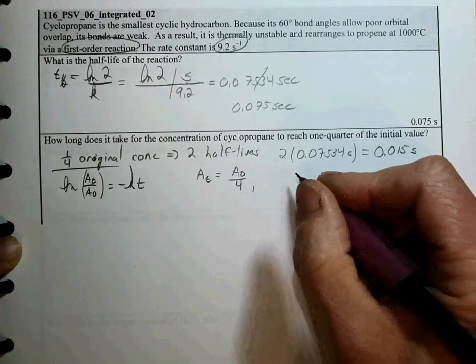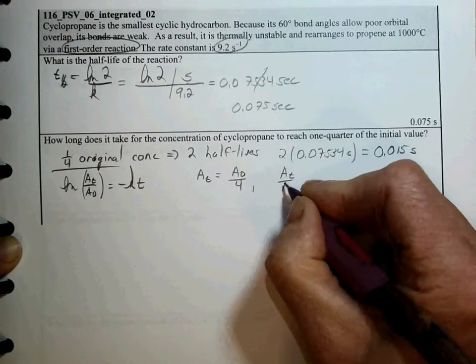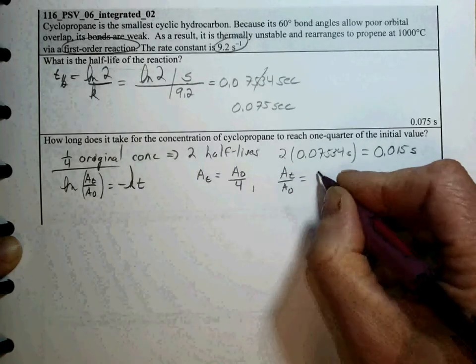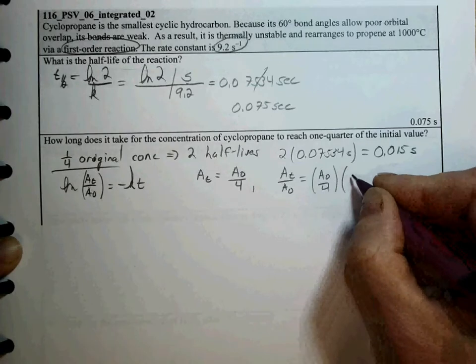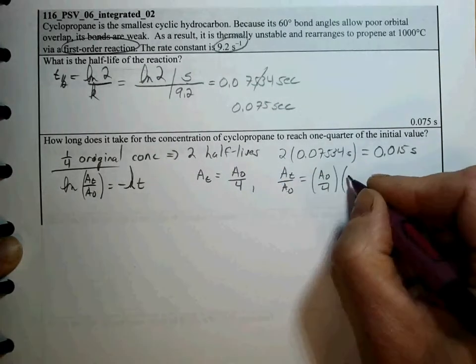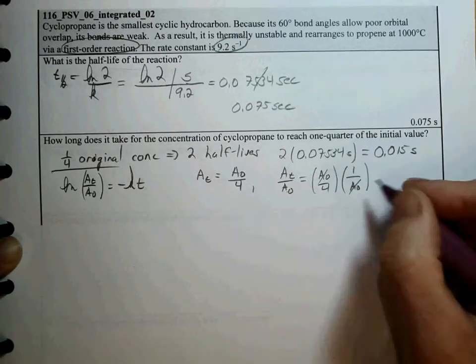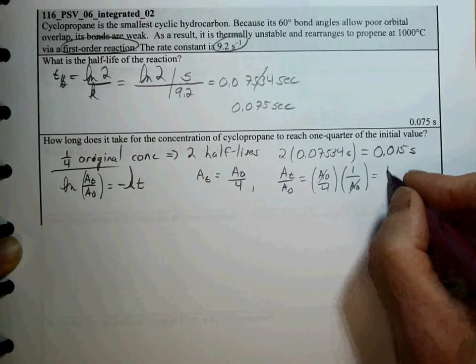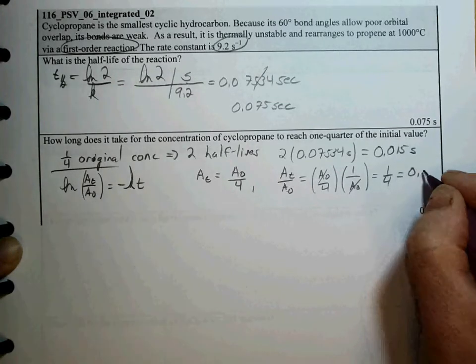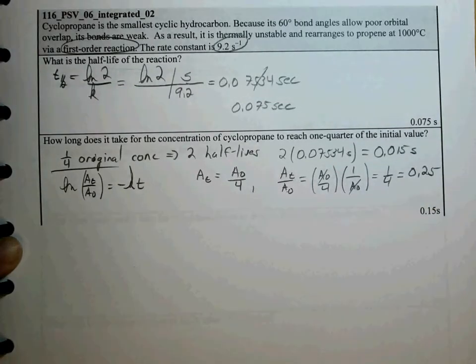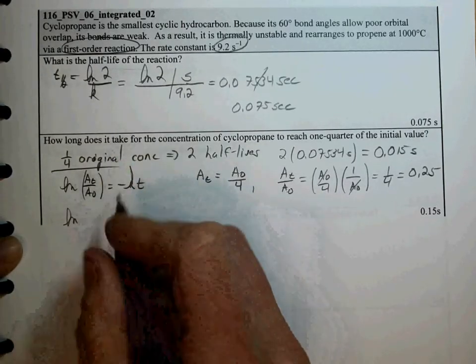So if we look at the fraction of A of t to A0, A of t is A0 over 4, and if we divide that by A0, we see our units cancel out, and this is equivalent to 1 quarter or 0.25. So we can substitute in and solve for t.